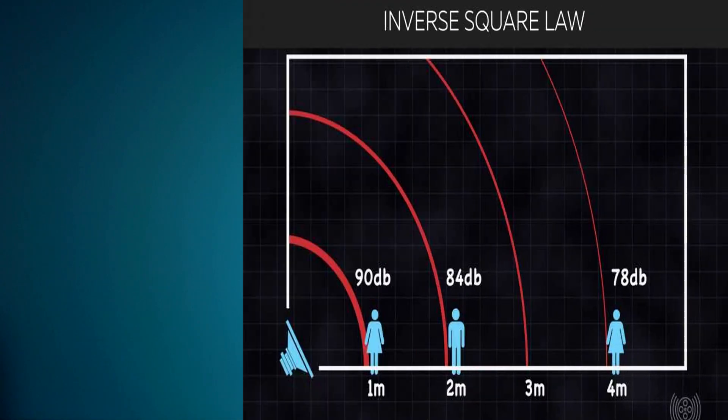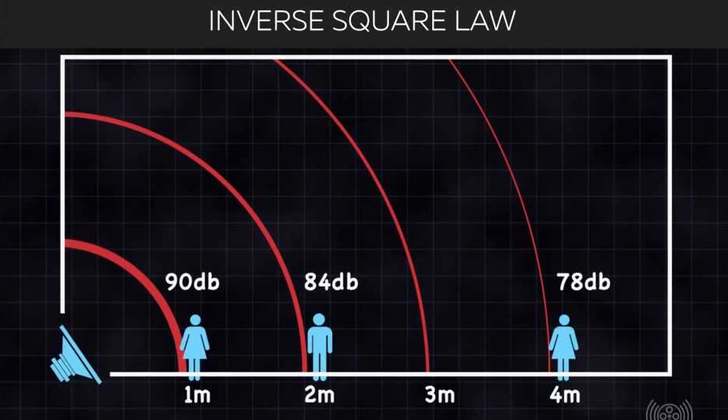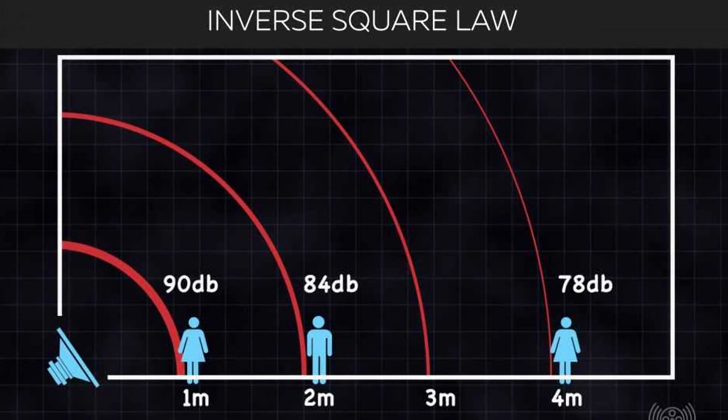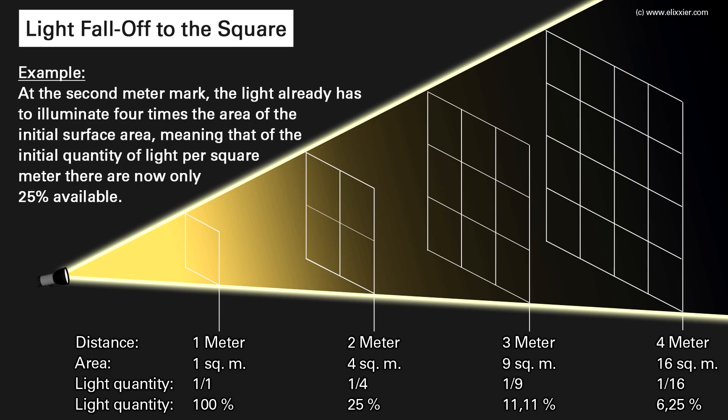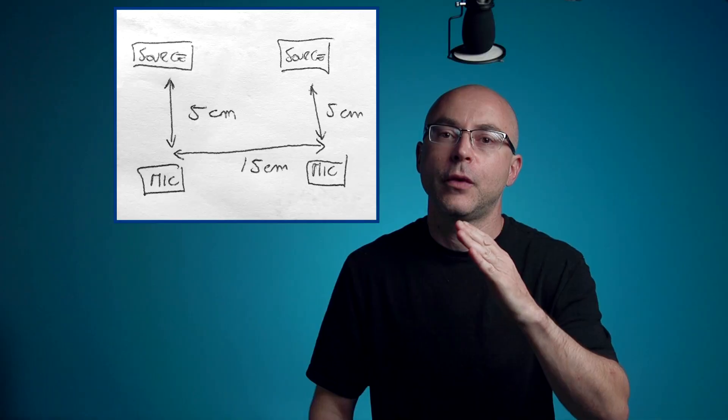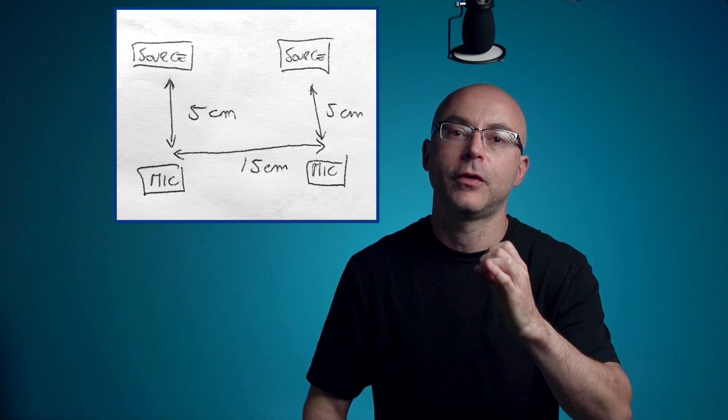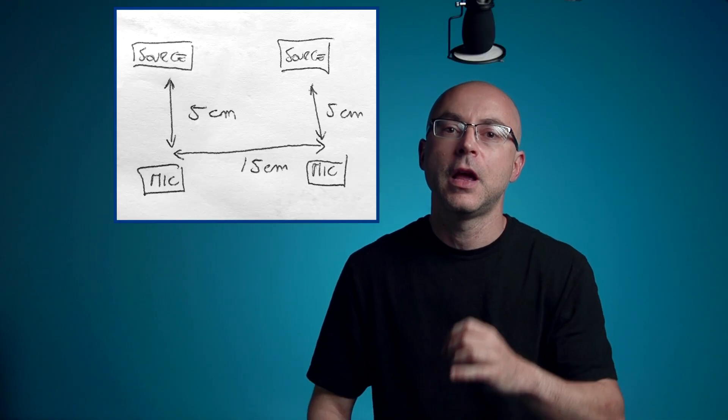I'm going to talk about audio employing the inverse square law, which is indispensable to know if you're serious about professional audio — what mics to use and how to use them. The inverse square law is a law of physics that applies to most everything, and can be seen as the force spreading out over an increasing area, focusing on the intensity, resulting in completely different results.